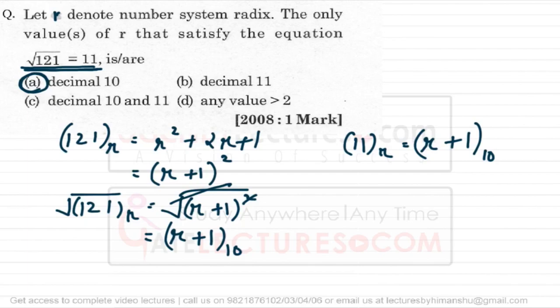Whatever the value of r, the LHS and RHS are always going to be the same. But one thing we note is: what cannot be the value of r? Since you are using 1 and 2 as valid symbols in this number system, 2 cannot be the base. The base must be greater than 2. So the answer is: any value greater than 2 — option P is correct.